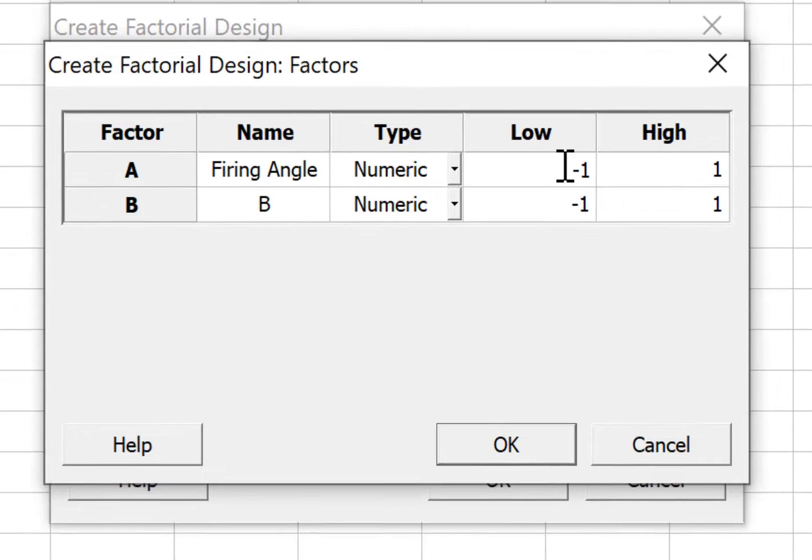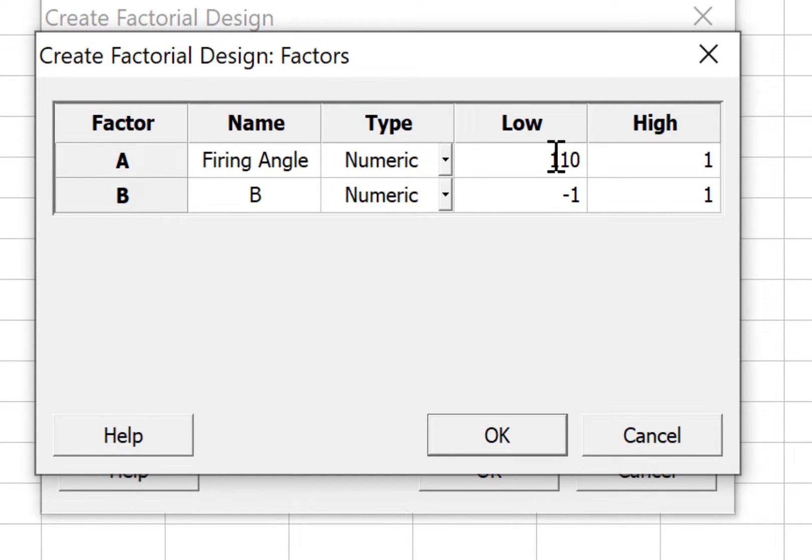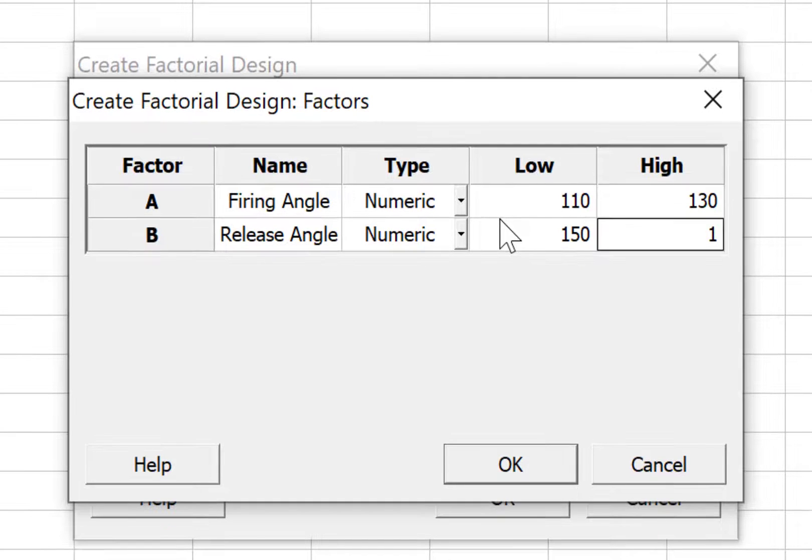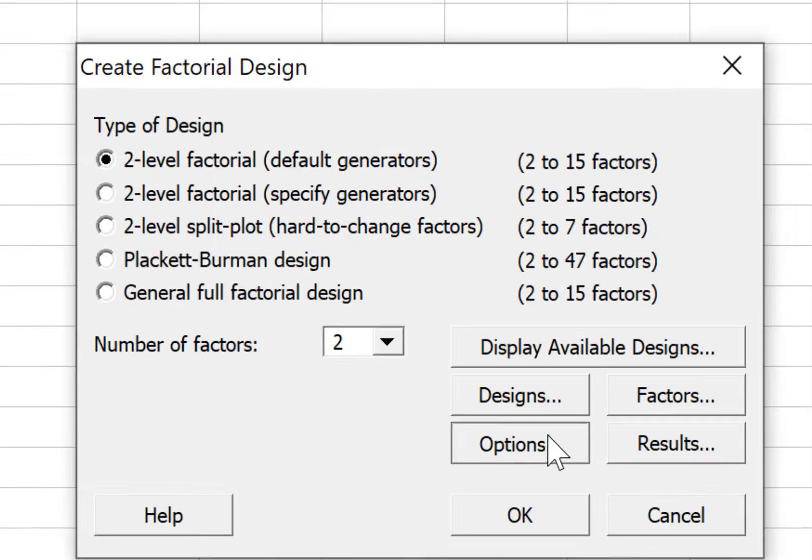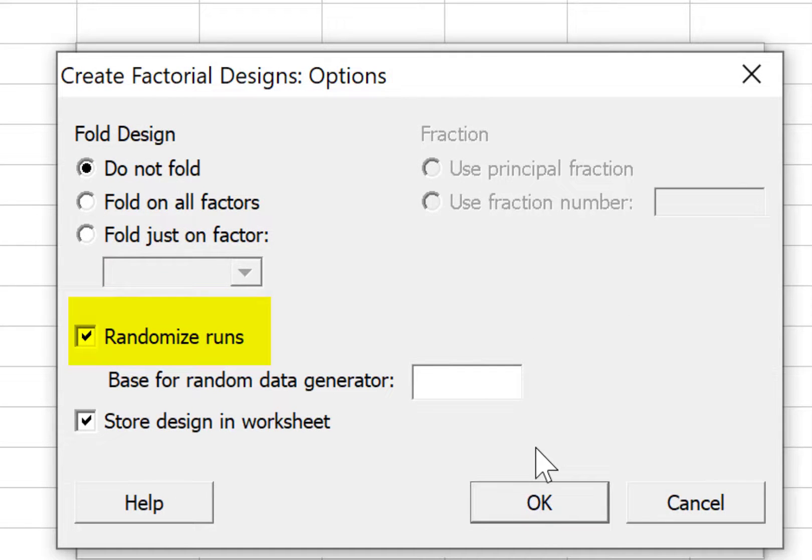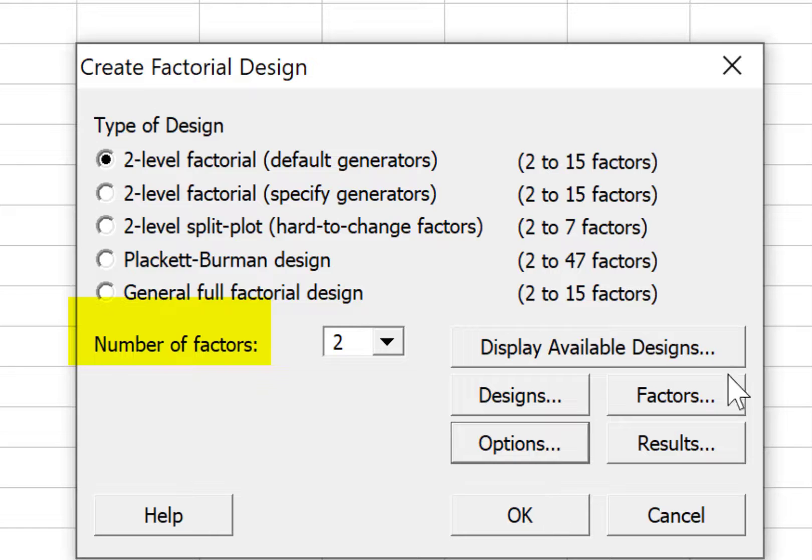Firing angle, low level is 110, high level is 130. Release angle, low level is 150 and high level is 166. In options, we keep the default option of randomizing the runs which is required in all experimentation. Now we can click OK to create the design in Minitab.